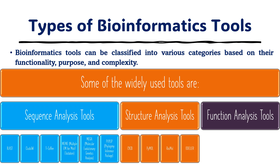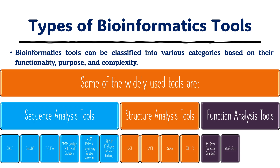Functional analysis tools are essential for understanding the functions and relationships between different genes and proteins, and for identifying pathways involved in disease. GEO, Gene Expression Omnibus, is a public repository of gene expression data providing tools for searching, downloading, and analyzing gene expression datasets. InterProScan is a software package that scans protein sequences against multiple databases of protein domains and families. COBRA Toolbox is a software package for constraint-based metabolic modeling, providing tools to simulate and analyze metabolic networks. Pathway Tools is a software package for constructing and analyzing metabolic pathway models, including a database of curated metabolic pathways and tools for metabolic engineering.